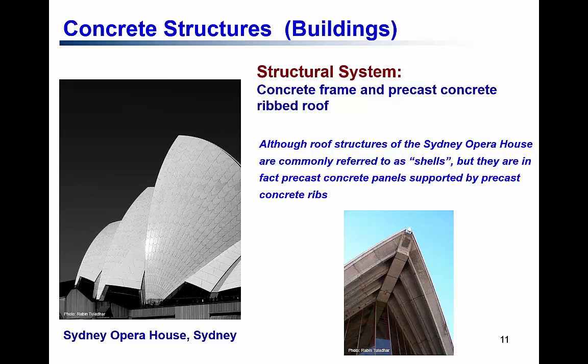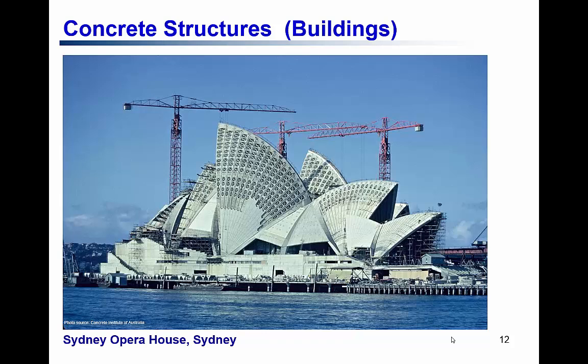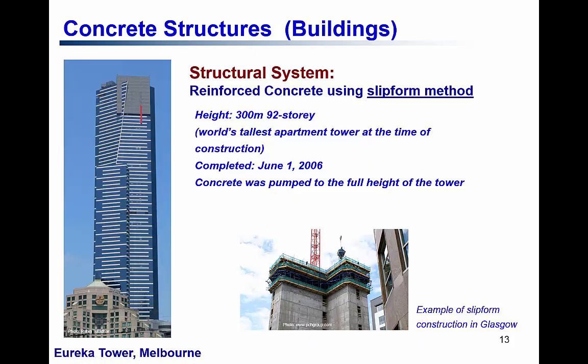Another iconic concrete structure is the Sydney Opera House. We admire its beauty but often do not appreciate that it is a concrete structure. As you can see underneath the Opera House, these are the precast ribs, and on top of the precast ribs there are precast shell elements. This is one of the rare pictures of the Sydney Opera House during construction, showing the precast ribs being put in and the precast slabs placed on the ribs.